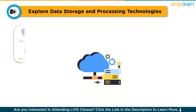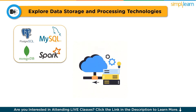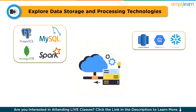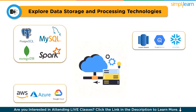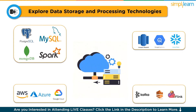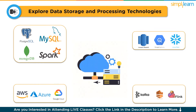The third step is to explore data storage and processing technologies. Learn about various types of databases, including relational databases like PostgreSQL and MySQL, NoSQL databases like MongoDB and Cassandra, and big data technologies like Hadoop and Spark. Understand data warehousing concepts and platforms such as Amazon Redshift, Google BigQuery, or Snowflake. Explore data lake technologies and platforms like Amazon S3, Azure Data Lake Storage, or Google Cloud Storage. Gain knowledge of stream processing frameworks like Apache Kafka, Apache Flink, or AWS Kinesis for real-time data processing.